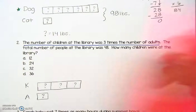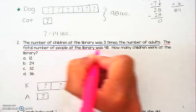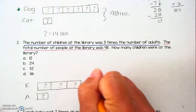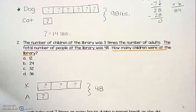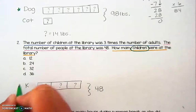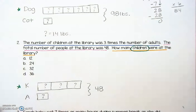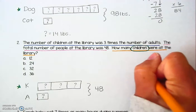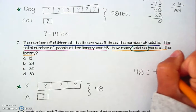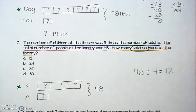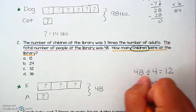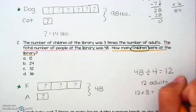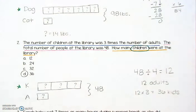Now I have my bar model set up. The second sentence says the total number of people at the library was 48. So that means altogether, kids and adults, there were 48 people at the library. How many children were at the library? It's important to pay attention that I'm looking for the children, not just the adults. So that means I can take this 48 people and divide it between the four groups — three groups of kids and one group of adults. I know 48 divided by 4 is 12 — that's a basic fact. So my mystery number is 12 adults. But again, I want to know the number of children, so I need to do 12 times 3, which is 36 kids. And that is one of our answer choices — there were 36 children at the library.